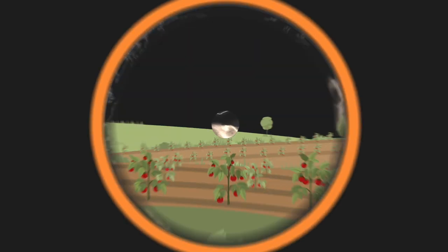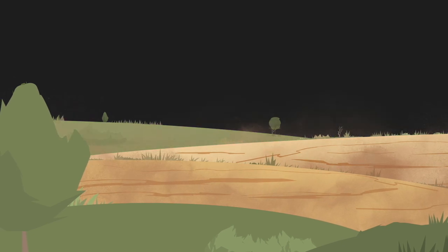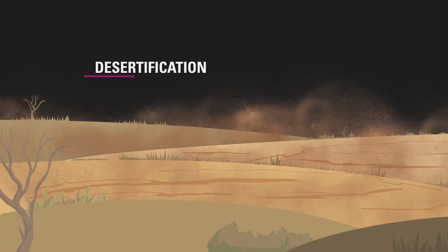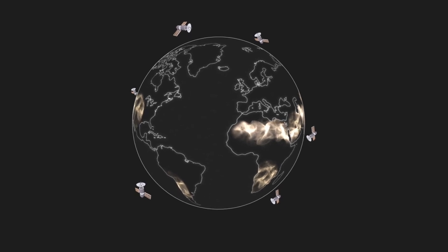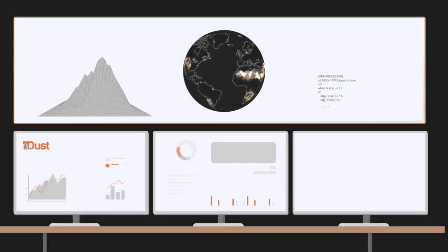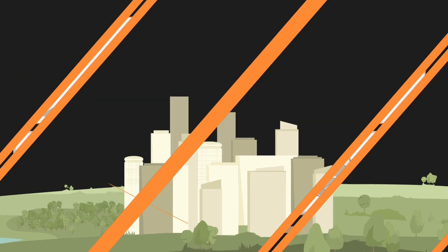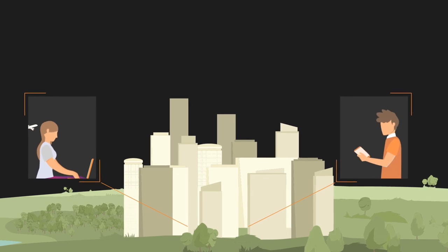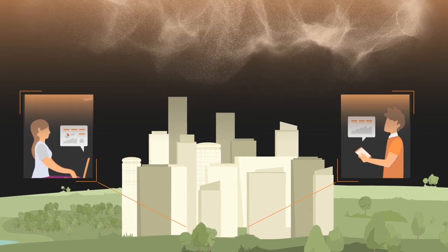At the same time, climate change and human activities affect the dust cycle. Improved models and observations help us to better understand the links between sand and dust storms and the Earth system. This is fundamental to prepare society for the effects of climate change on dust.